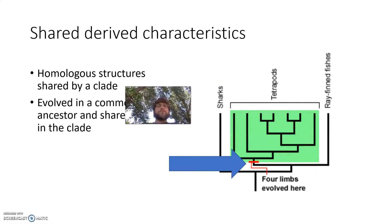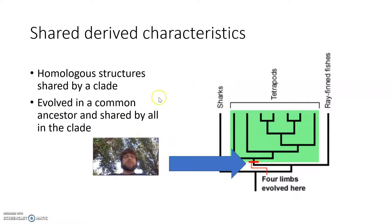Now, in the previous video, I talked about shared-derived characteristics, and these are homologous structures shared by a clade. So in a cladogram, a clade is your ancestral species and all of its descendants. So in this case, in this image, the four limbs is a homologous structure. It is a shared-derived characteristic. And I use shared-derived characteristics to create my cladogram, to create those branches you see in a cladogram.